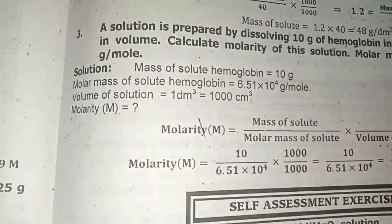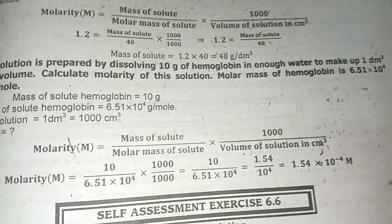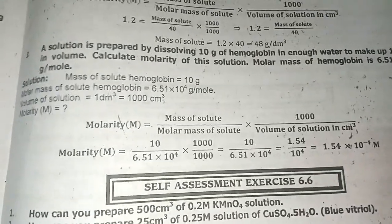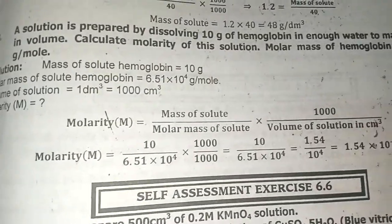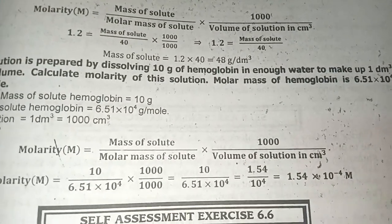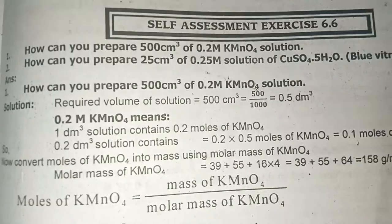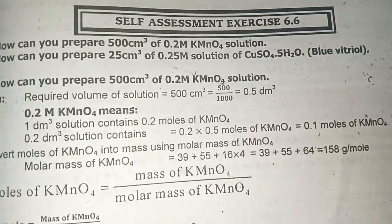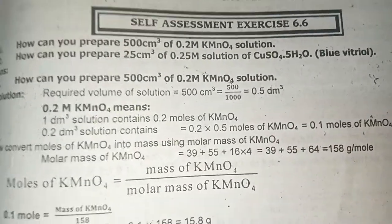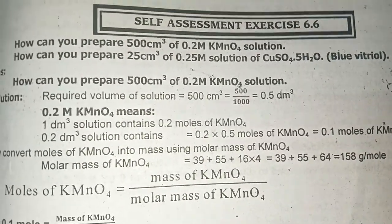Now question 3 — the grams of hemoglobin are given and we need to find the molarity. And question 4 uses the acid-base formula.